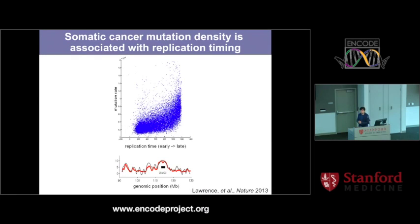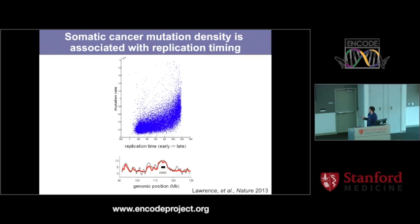Our first work with ENCODE data, about six or seven years back in collaboration with John Stamm, found the correlation between replication timing and mutation density — first in germline, and then in collaboration with Eric Lander and Gary Getz, we observed the same effect in cancer data. Late in replication, there are more mutations than early in replication. There are several biological models for this, though the argument isn't fully settled. Across cancer types and datasets, people have observed the same effect.